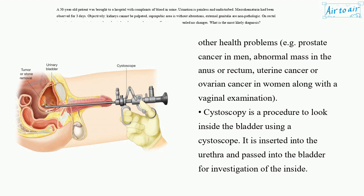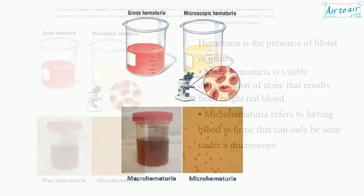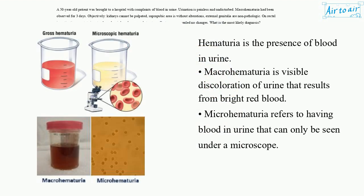Cystoscopy is a procedure to look inside the bladder using a cystoscope. It is inserted into the urethra and passed into the bladder for investigation of the inside. Hematuria is the presence of blood in urine. Macrohematuria is visible discoloration of urine that results from bright red blood. Microhematuria refers to having blood in urine that can only be seen under a microscope.